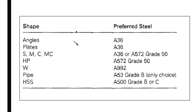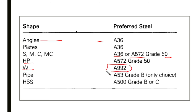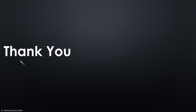Regarding preferred steel type by shape: angles and plates commonly use A36; American Standard shapes, miscellaneous shapes, and channels use A36 or A572 Grade 50; HP sections use A572 Grade 50; wide flanges commonly use A992; steel pipe uses A53 Grade B; and Hollow Structural Sections use A500 Grade B or C. This concludes our introduction. Thank you, and I hope you benefit from what has been explained.